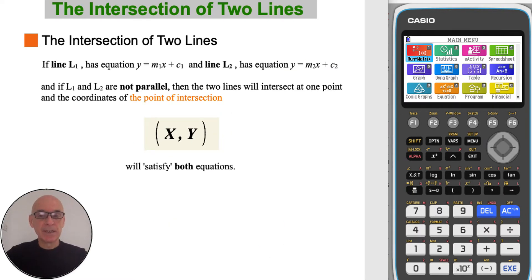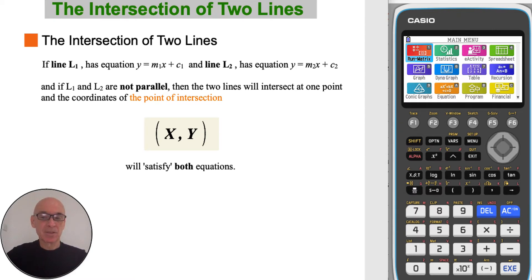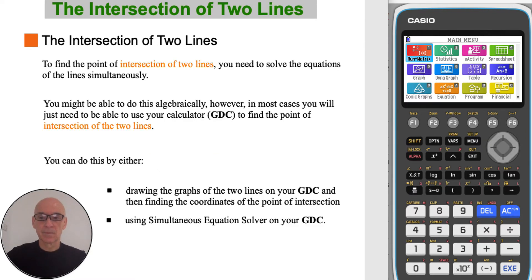In general, if lines L1 and L2 have the equations shown and if the lines L1 and L2 are not parallel, then they will intersect at one point and the coordinates of the point of intersection will satisfy both equations. To find the point of intersection of two lines you need to solve the equations of the lines simultaneously.